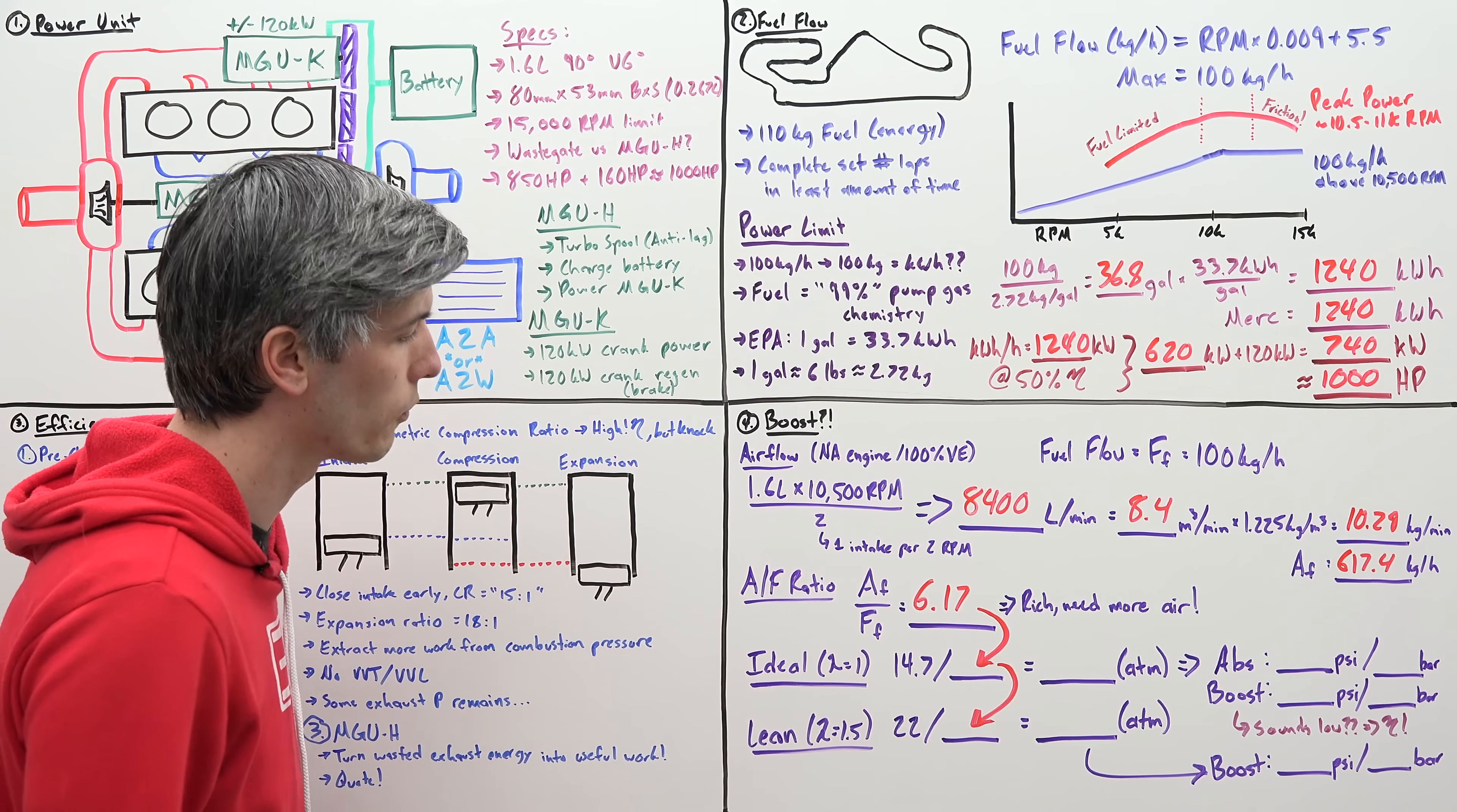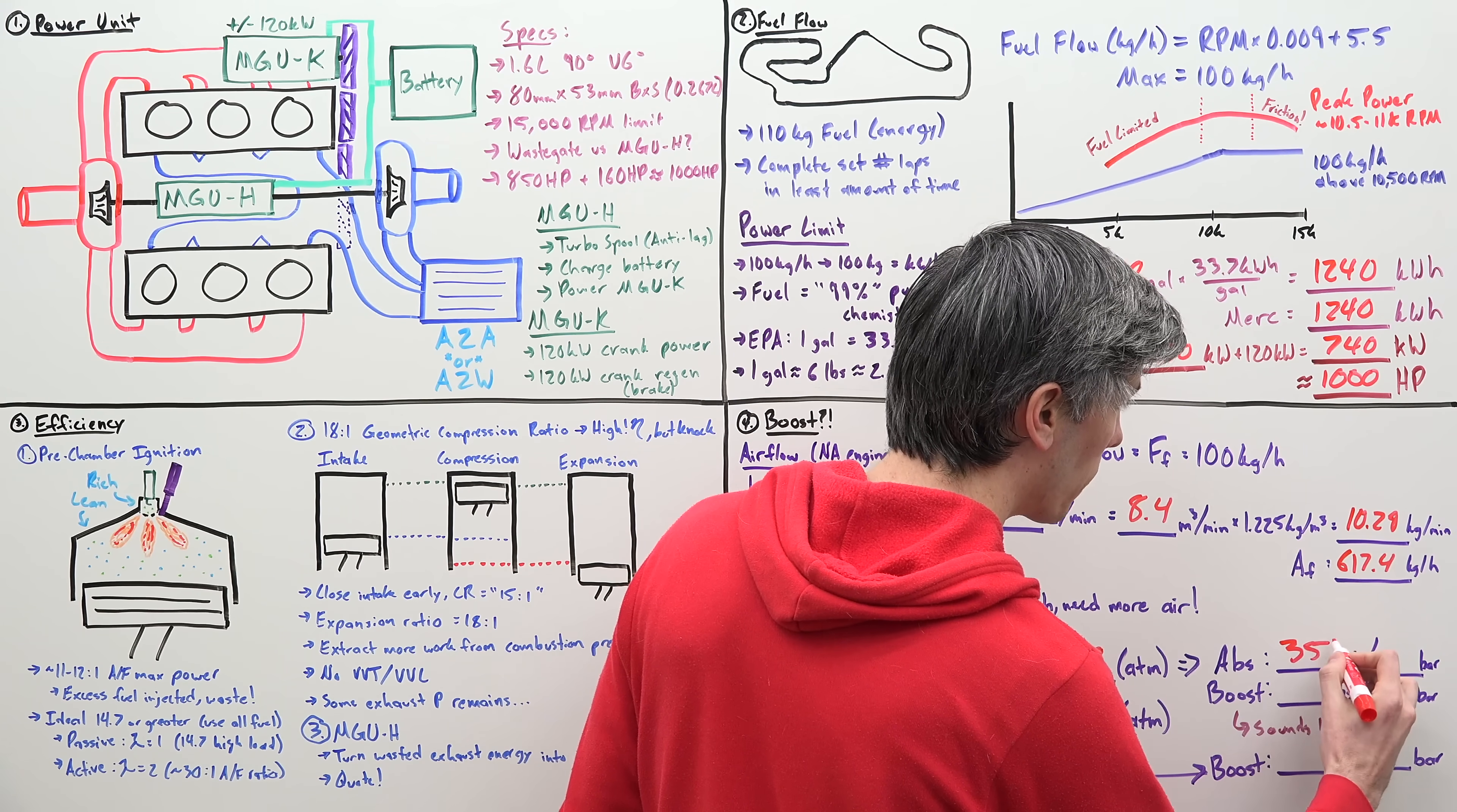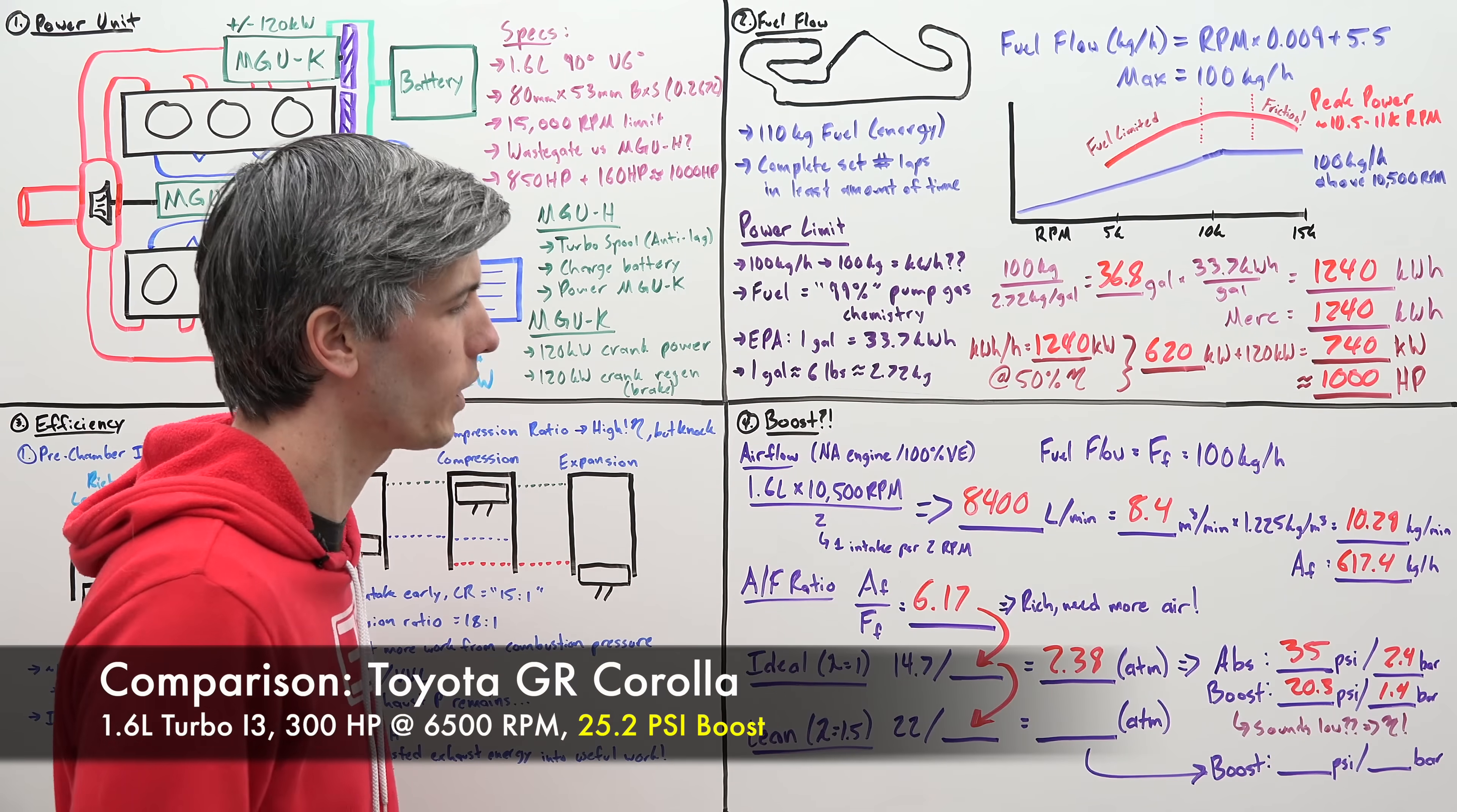So, ideally, our air fuel ratio would be 14.7 to 1. That's the ideal stoichiometric air fuel ratio. So, if we take 14.7, divide it by 6.17. That gives us the amount of air which we would need to have an ideal ratio, which would be 2.38 atmospheres. In other words, our absolute pressure would be about 35 psi or 2.4 bar. Meaning, our boost pressure subtracting our atmospheric pressure would be 20.3 psi or 1.4 bar. So, boost pressure for this 1.6 liter engine making 850 horsepower is only 20 psi. That seems incredibly low.